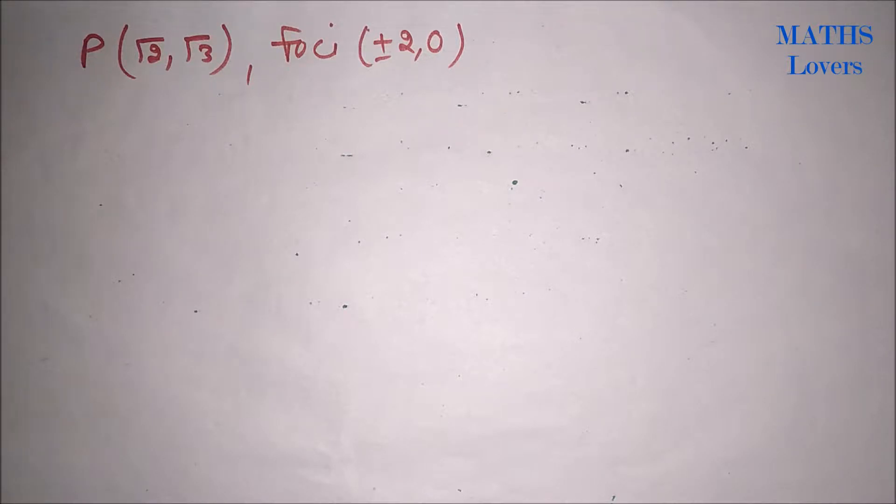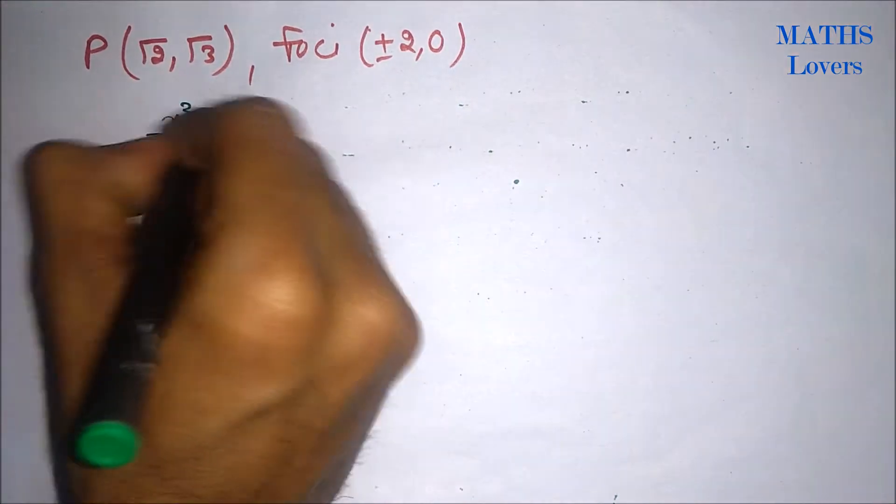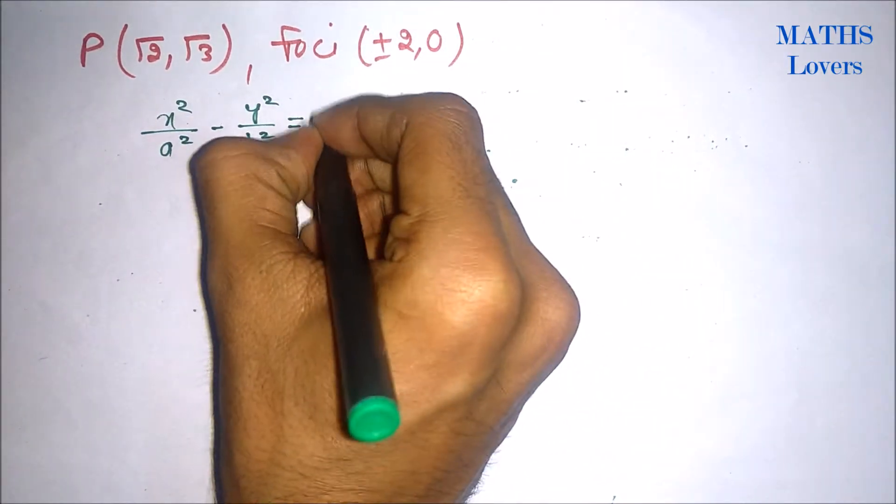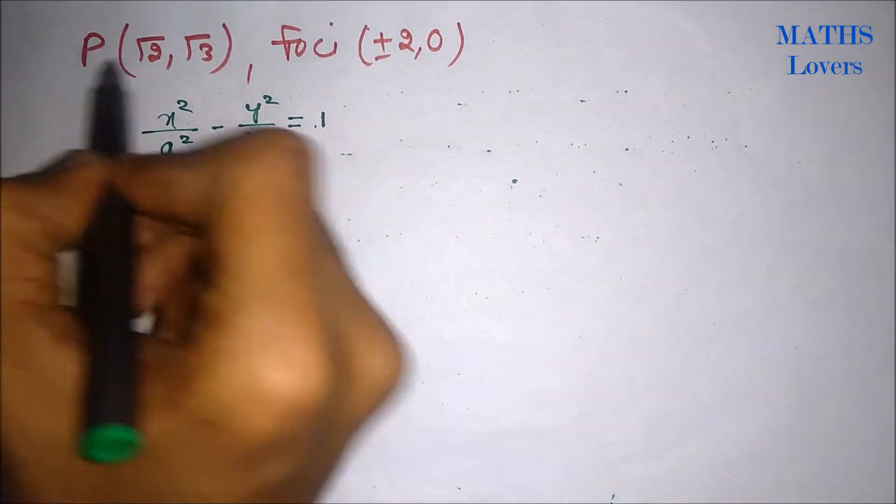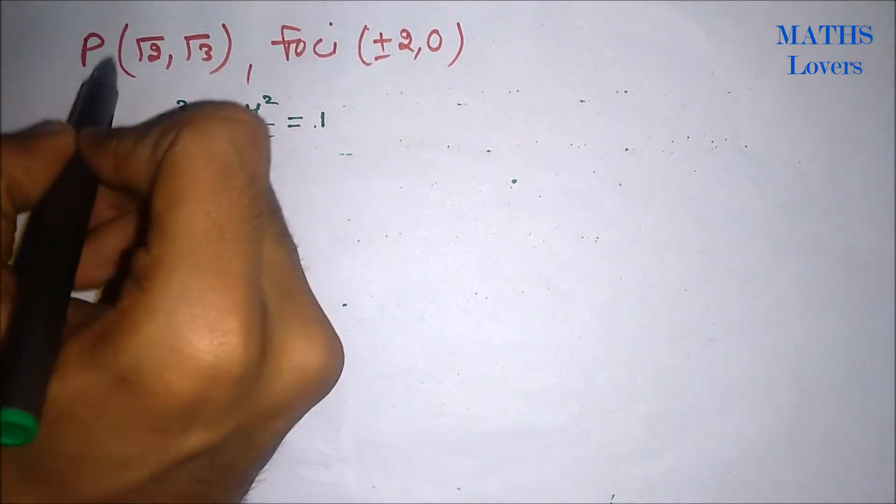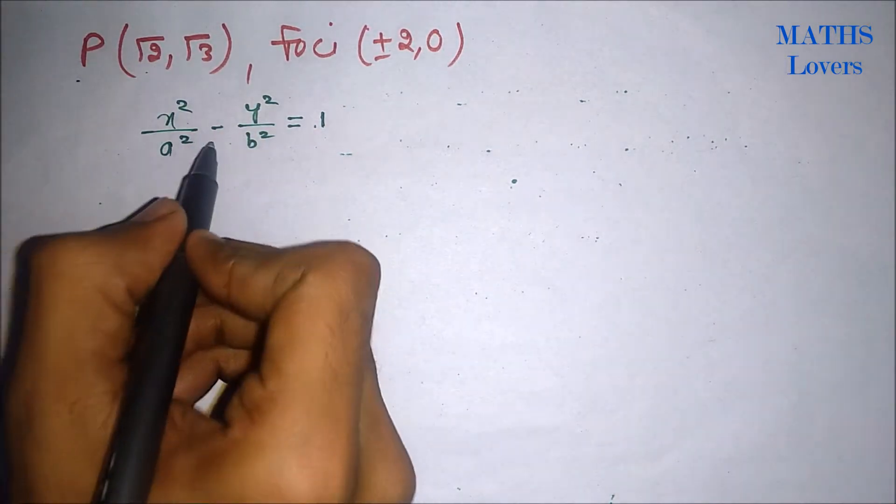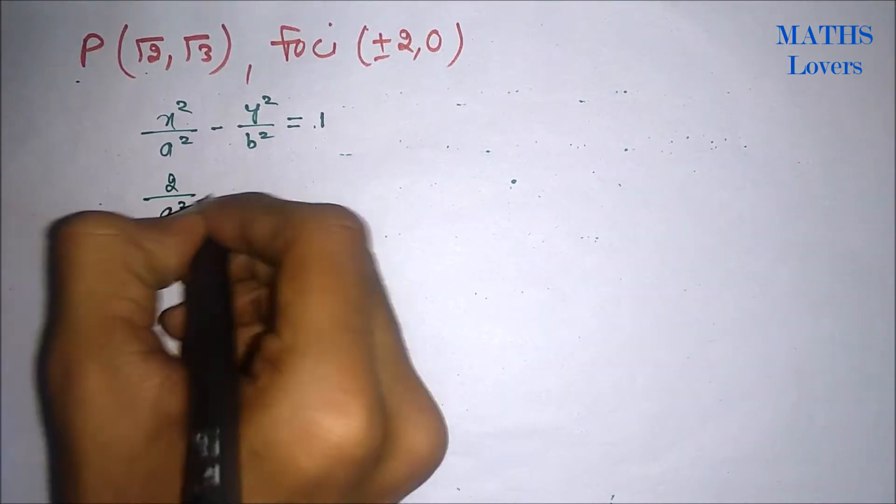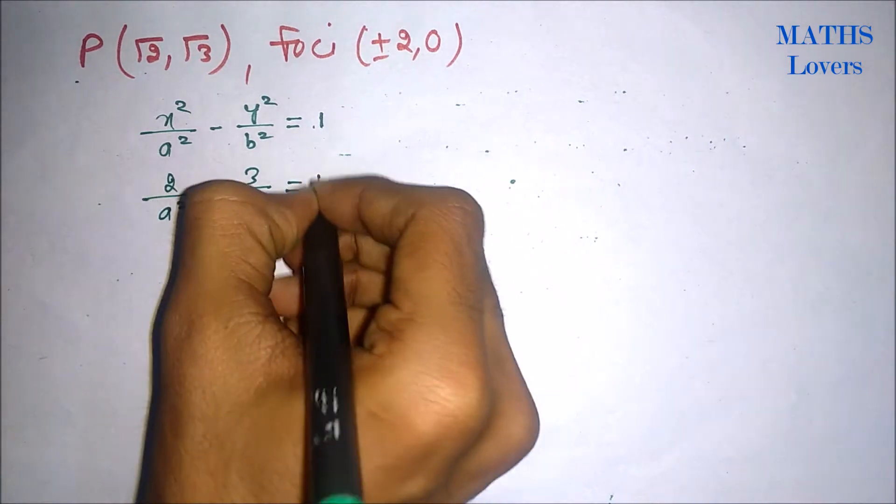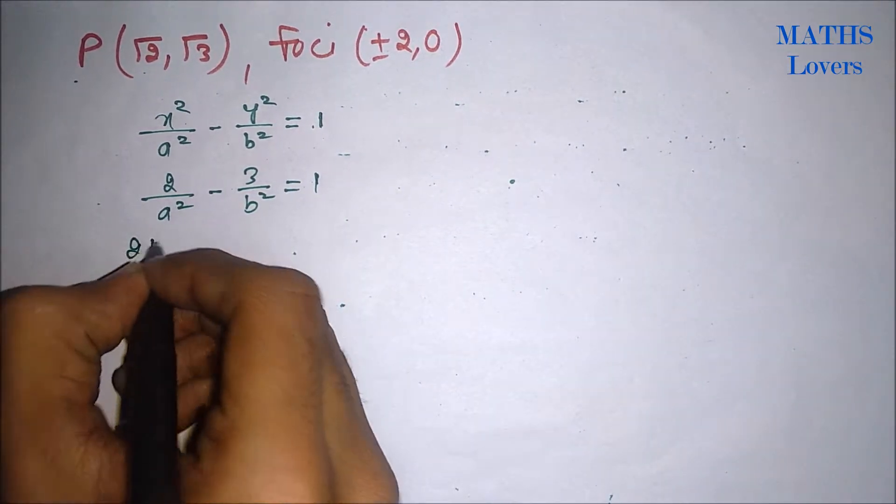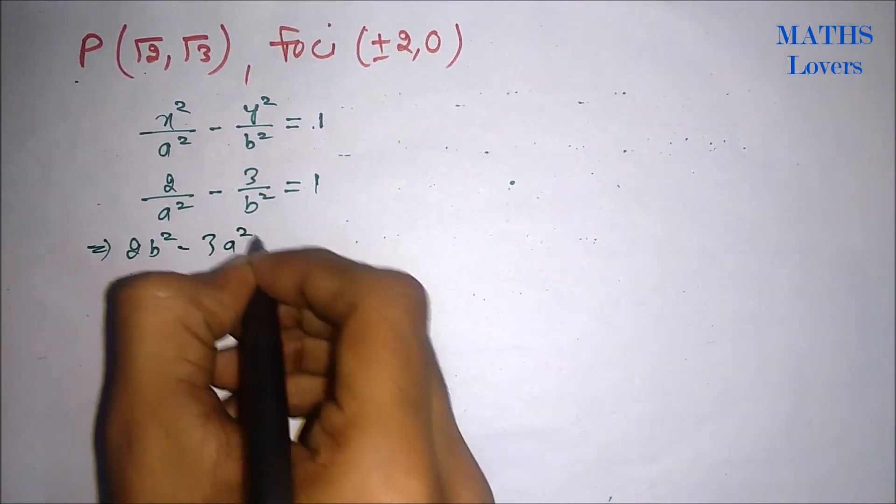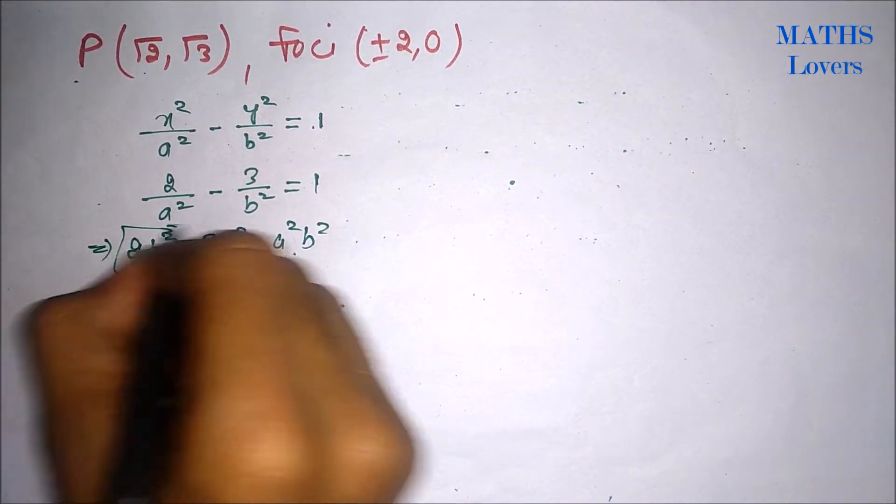If we remember the basic hyperbola equation, it is x² / a² - y² / b² = 1. We know that this hyperbola passes through this point, that means this point will lie on it. So we can put it here: (√2)² / a² - 3 / b² = 1. If you cross-multiply it, you will get 2b² - 3a² = a²b². This is one of the equations.